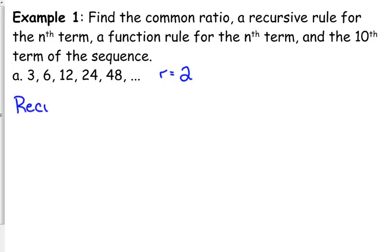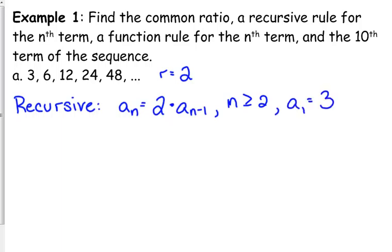The recursive rule is not as useful, but you still need to be familiar with it. The nth term can be found by taking the previous term, a sub n minus 1, times the common ratio of 2. Actually, let me change the order of that. Put the 2 in front. That's when n is greater than or equal to 2, and our first term here was equal to 3.